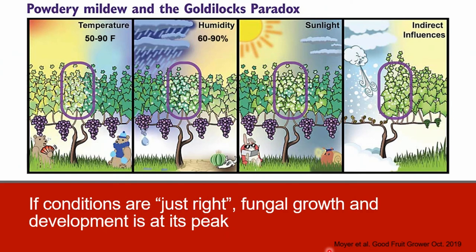Ideal relative humidity ranges from 60 to 90 percent and influences how quickly the conidia germinate. The powdery mildew fungus is sensitive to UV light and UV radiative heat, and sporulation is optimal when light intensity is low, typically at dusk and dawn. In addition, new growing shoots are more susceptible to powdery mildew infections. All four of these variables will become important when we discuss management strategies.